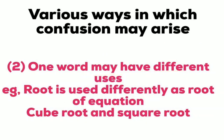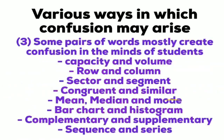A word may have different uses - for example, 'root' is used in equations, cube root, and square root. Some pairs of words mostly create confusion in the minds of students - such as: capacity and volume, row and column, sector and segment, concurrent and similar, median and bar chart, histogram, complementary and supplementary, and sequence and series. You should research the differences between these terms.